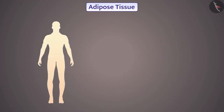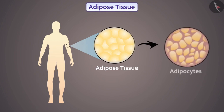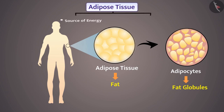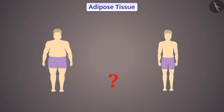The adipose tissue is present below the skin and between internal organs. Its cells, that are adipocytes, are embedded in a jelly-like matrix. Adipose tissue stores fat, which is why its cells are filled with fat globules. Due to storage of fat, adipose tissue is a source of energy and it also acts as a heat insulator. That's why a slim person feels more cold compared to a fatty person.